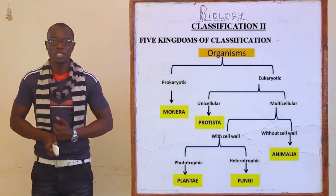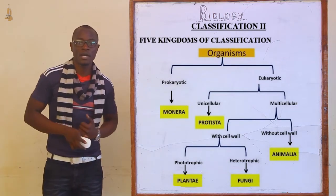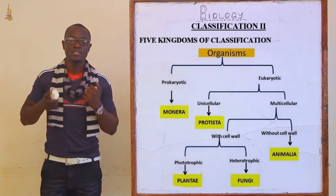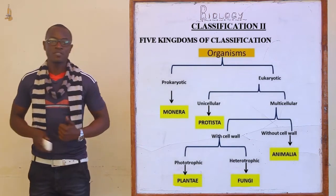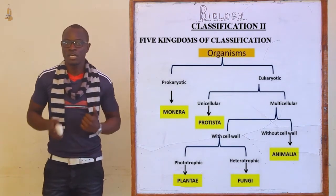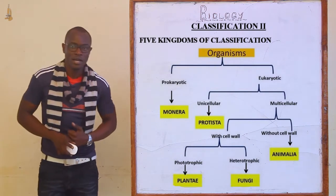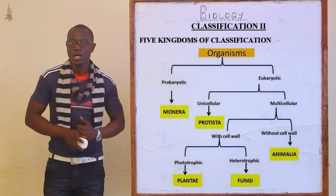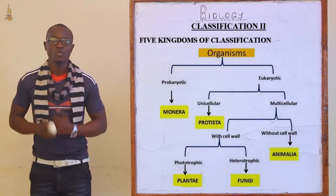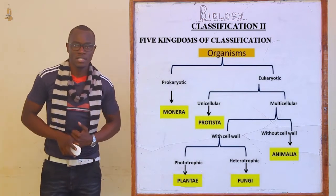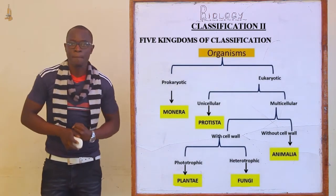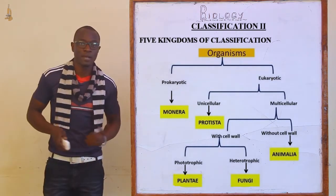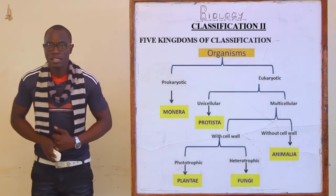Considering the kingdom, we have five kingdoms of classification. The first is Kingdom Monera, comprising only bacteria — also called Kingdom Prokaryota. Next is Kingdom Protoctista, or Kingdom Protista, or Kingdom Eukaryota, which includes protozoa, algae, and amoeba. Then we have Kingdom Fungi or Kingdom Mycophyta, Kingdom Plantae comprising all plants, and Kingdom Animalia comprising all animals.